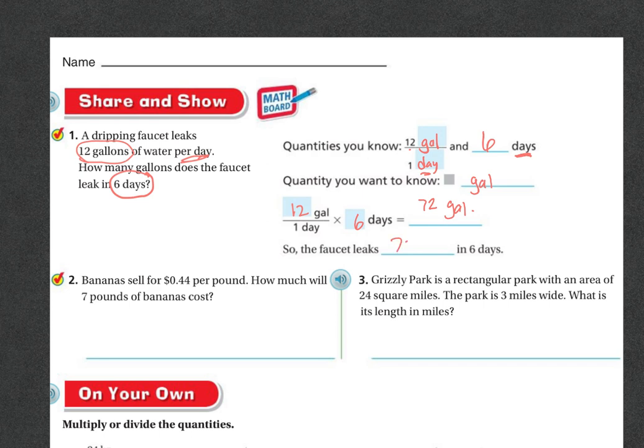The next problem: Bananas sell for 44 cents per pound. How much will seven pounds cost? We're going to set this up like the other one. We've got 44 cents per one pound. And we know we have seven pounds. But we don't know how much it costs. So seven times 44 is going to be $3.08. So for seven pounds, you're going to pay $3.08.